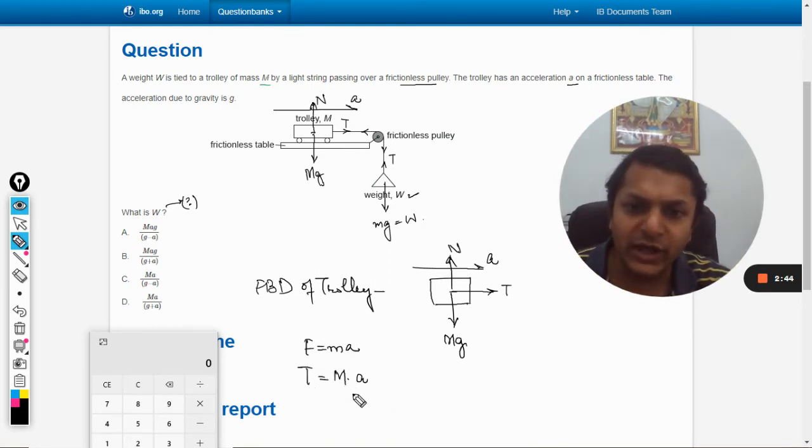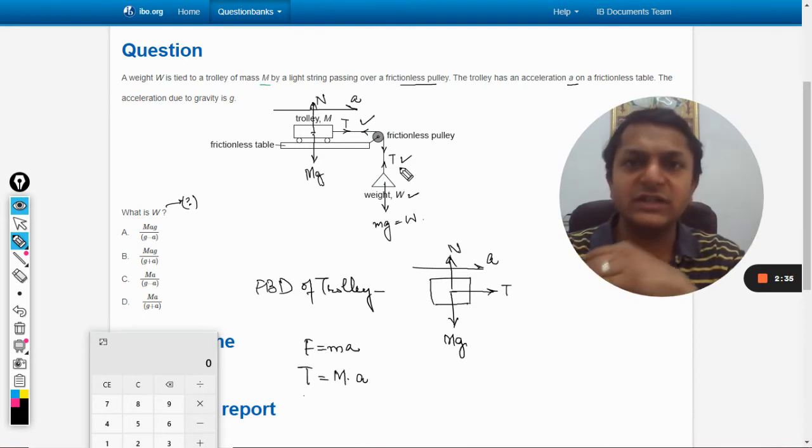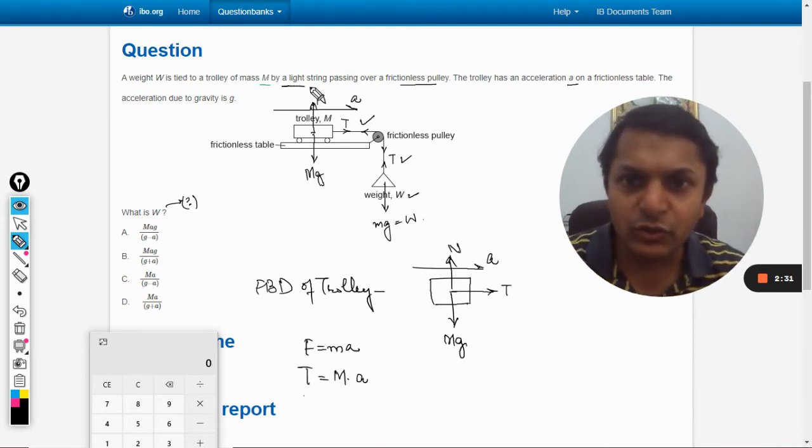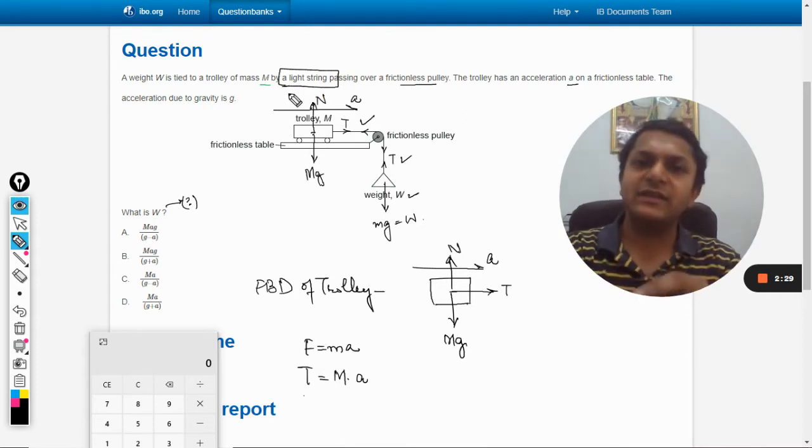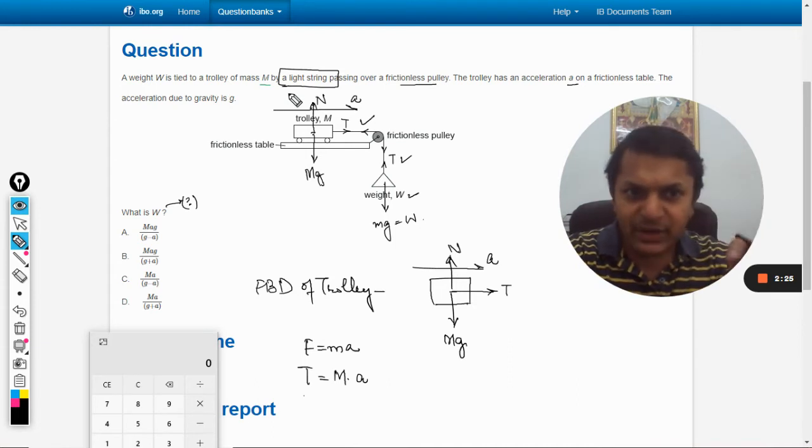The same tension will be acting for the weight W also at the other side because the string is massless. It is also given in the question: light string. So the string is massless, so the tension is the same everywhere in the string.